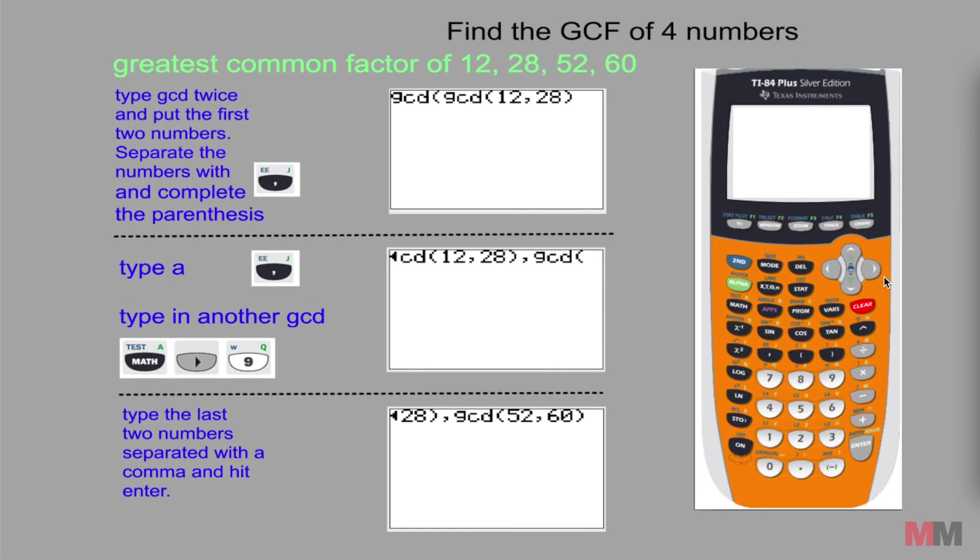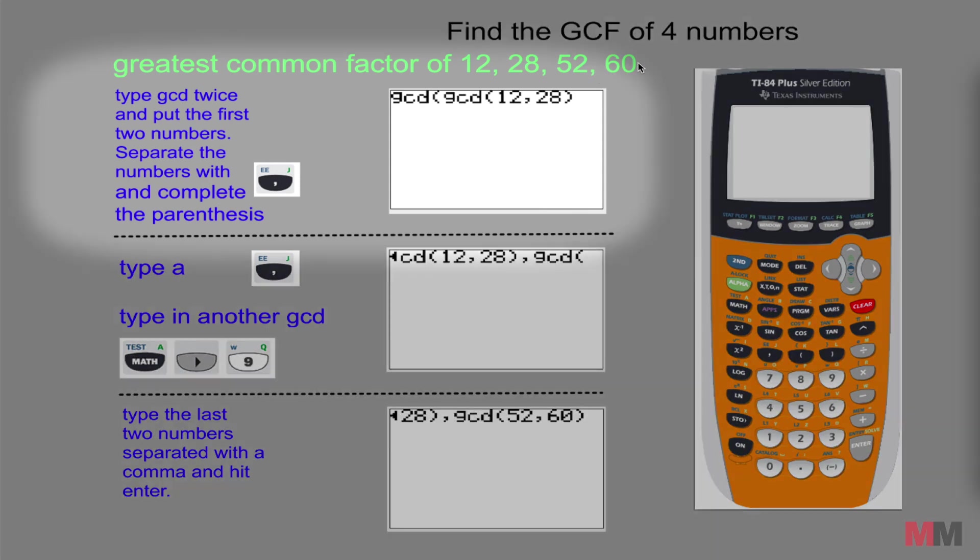Find the greatest common factor or divisor of four numbers. So let's try to do it on 12, 28, 52 and 60. First step, similar to the one with three numbers, type in GCD twice followed by the first two numbers separated with a comma. So GCD, GCD, 12 and 28.